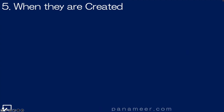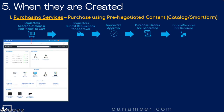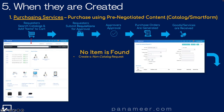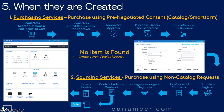Slide five: when purchase agreements are created. Let's walk through the procurement process in two simple steps. Step one, purchase services are performed, and if no catalog item or pre-negotiated content is found. Step two, sourcing services are performed. As you can see on the slide, purchase agreements are the fifth step in the sourcing services process. It's worth noting that oftentimes these purchase agreements then feed the amount of content that the requester finds back in the first step when they search.